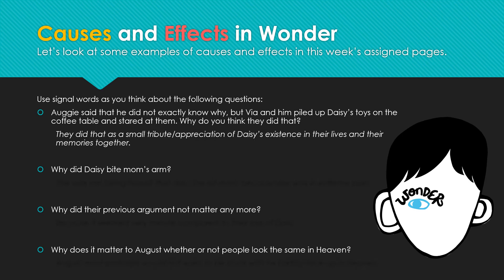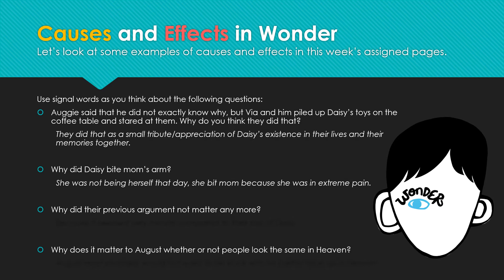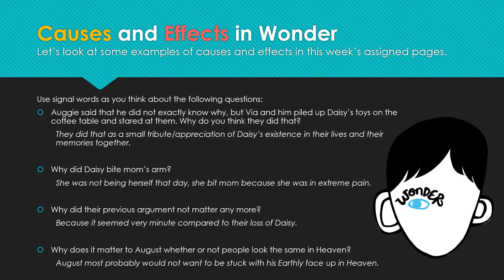Augie and Via piled up all of Daisy's toys on the coffee table as a small tribute and appreciation of Daisy's existence in their lives and their memories together. Daisy bit Mom's arm because she was not being herself that day — she was in extreme pain. The previous argument did not matter anymore because it seemed very minor compared to the loss of Daisy. It mattered to August that people did not look the same in heaven because he most probably would not want to be stuck with his earthly face up in heaven.